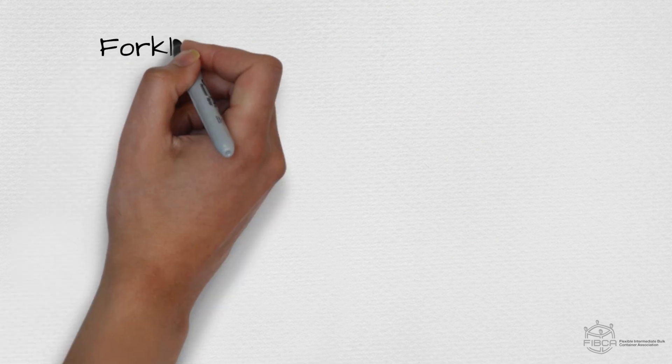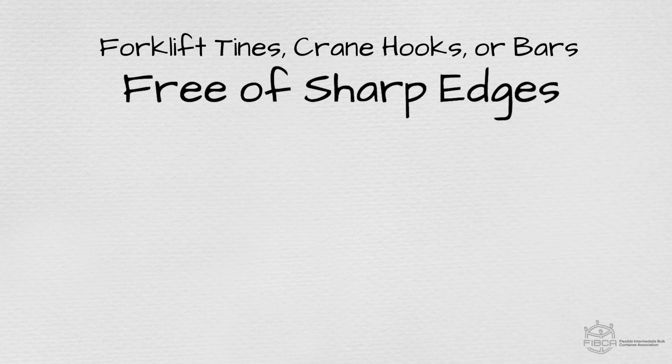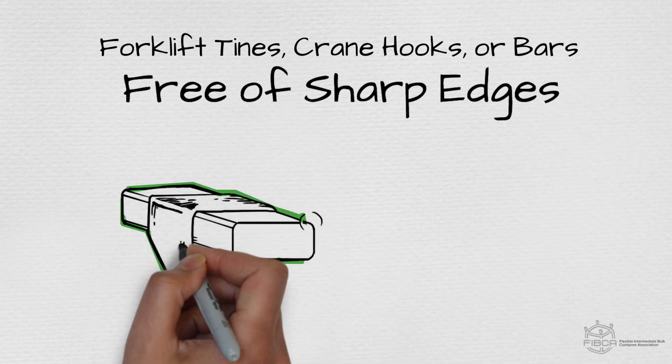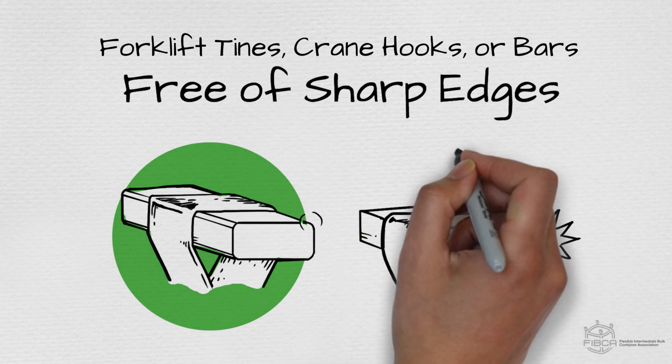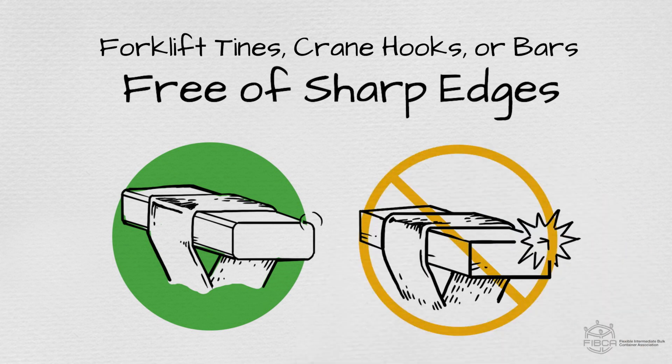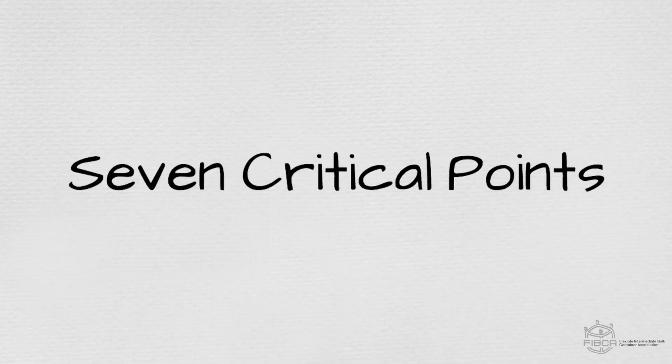Handling devices, such as forklift tines, crane hooks, or bars, must be free of sharp edges or protrusions. Edges must be rounded to have a radius of 5 millimeters or greater. When you are sure you have the right FIBC and the right equipment, you'll need to remember these 7 critical points when filling and emptying FIBCs.